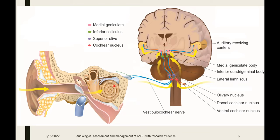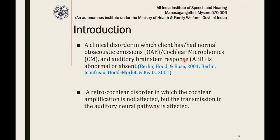One simple definition: you have normal otoacoustic emissions because your outer hair cells are normal, but you have an abnormal ABR because ABR comes from your auditory nerve. So if you have presence of OAEs and absence of ABR — brainstem responses are absent but cochlear responses are intact — then we suspect and diagnose an individual as having auditory neuropathy spectrum disorder. It's a retrocochlear disorder in which cochlear amplification is not affected, but transmission in the auditory neural pathway is affected.